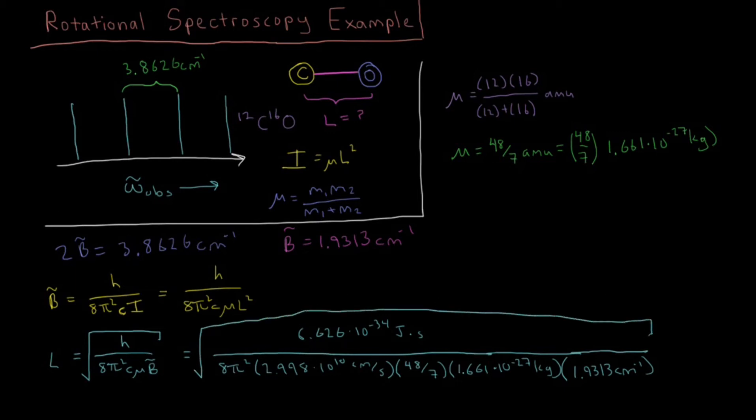So when you punch that into a calculator, just make sure that you're being careful to take the appropriate exponents. Make sure you're dividing and multiplying the proper things. That's a very big denominator, so it might help to store some intermediates on the way there. But if you put that into your calculator carefully, what you should end up with is that the length of this bond, once you go through all of the algebra, you should get back 1.128 times 10⁻¹⁰ meters.